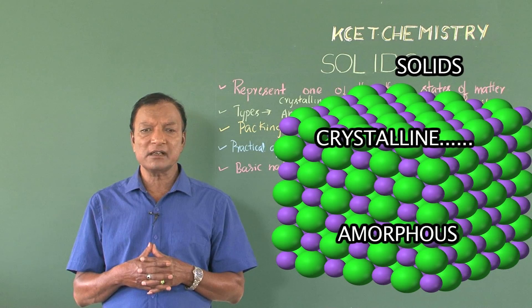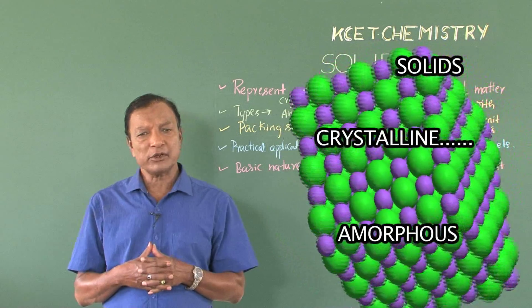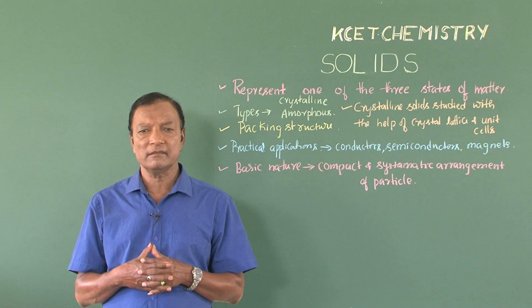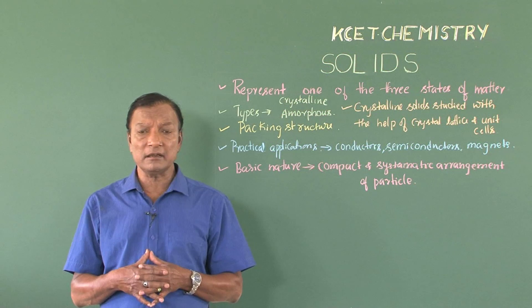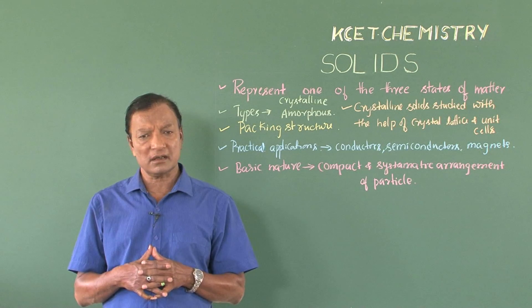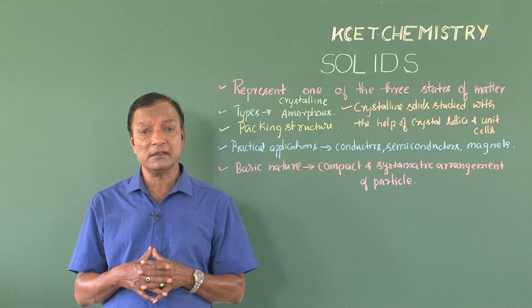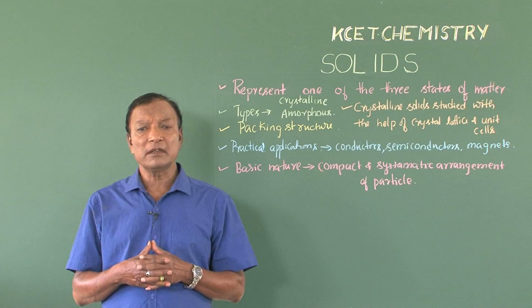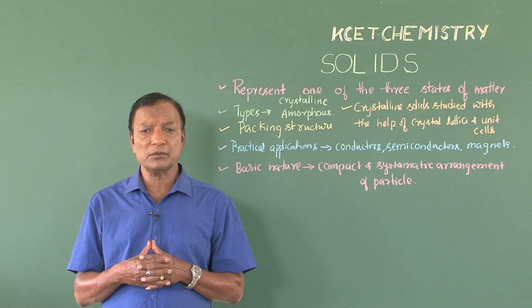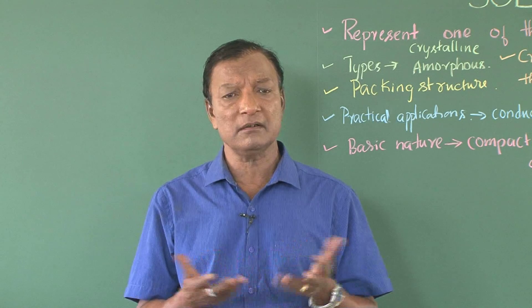The major part of this chapter deals with the crystalline solids which have the compact and systematic arrangement of particles. Their study is undertaken with the help of unit cells and crystal lattices. Further, the arrangement of the particles is taken up with the help of close packed structures. And in these close packed structures we may have perfect and imperfect crystalline solids.